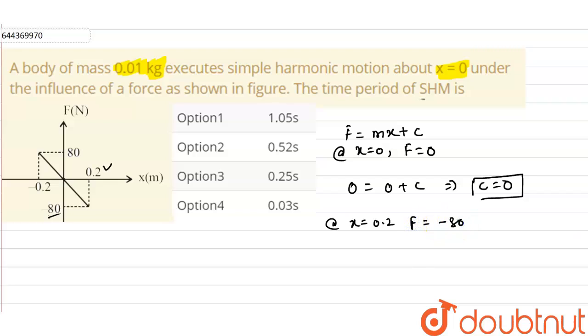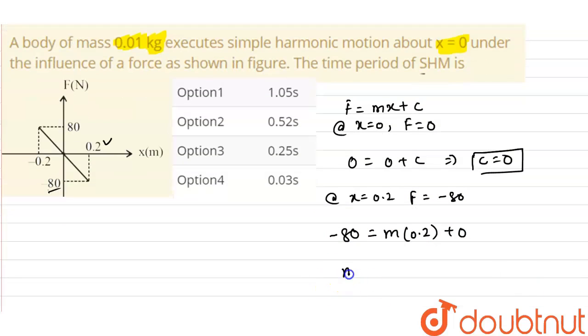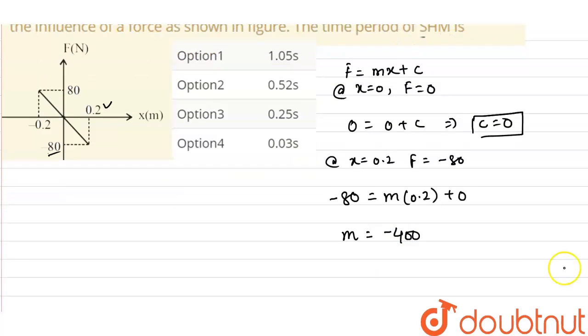So at x equals 0.2, our force is minus 80 newtons. So substituting, we get minus 80 equals m into 0.2 plus 0.